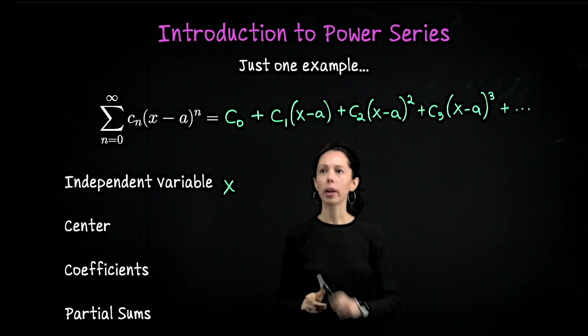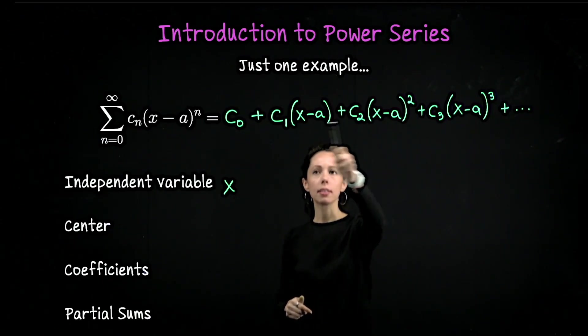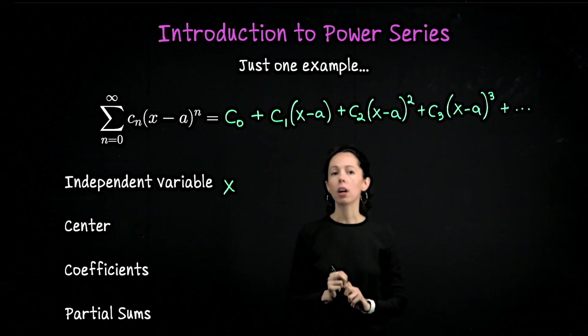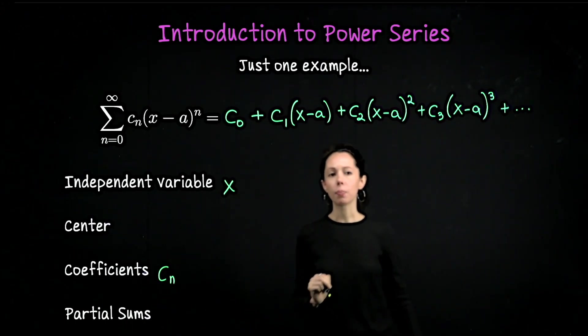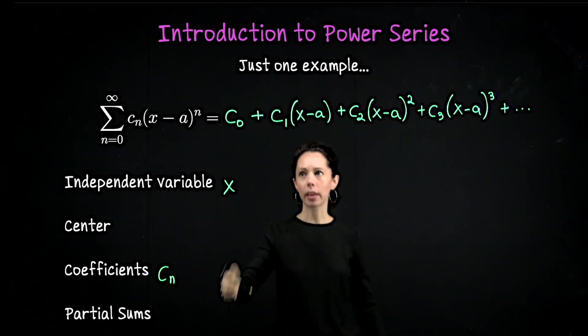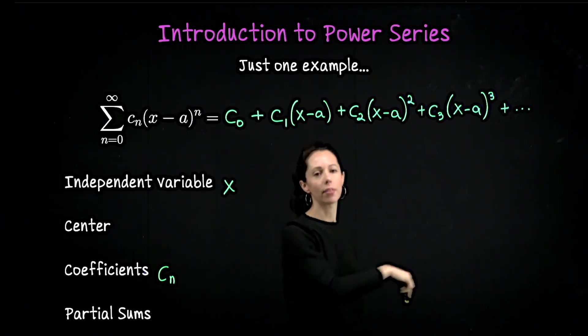So x is a variable here, what else is going on? We have these numbers c_0, c_1, c_2, c_3. These are called coefficients. For a given power series, these are just numbers, like 2, negative 1, 3, 0.7, some could be 0.